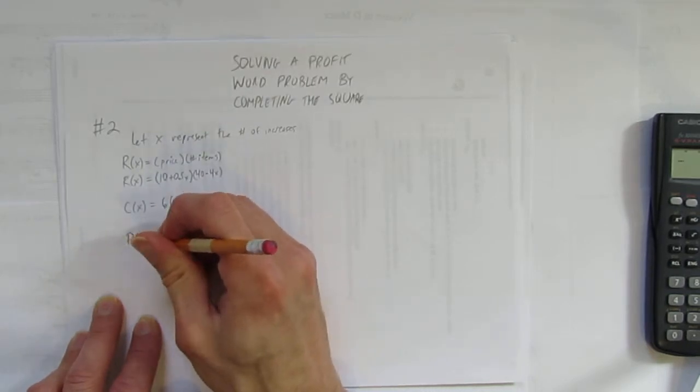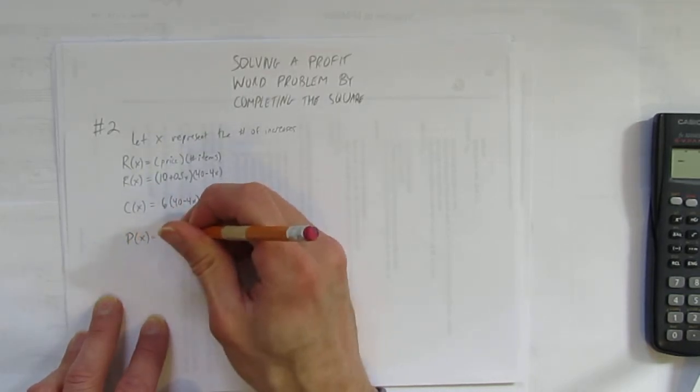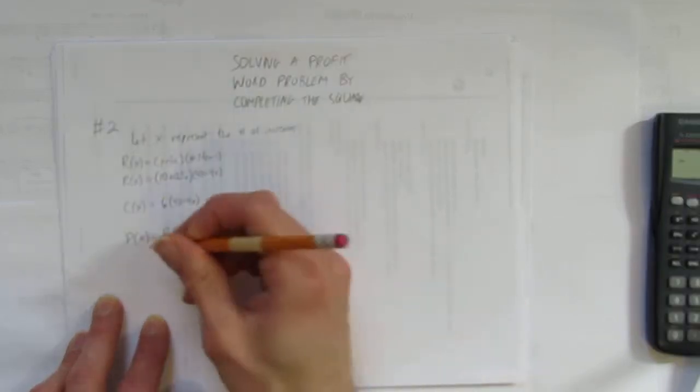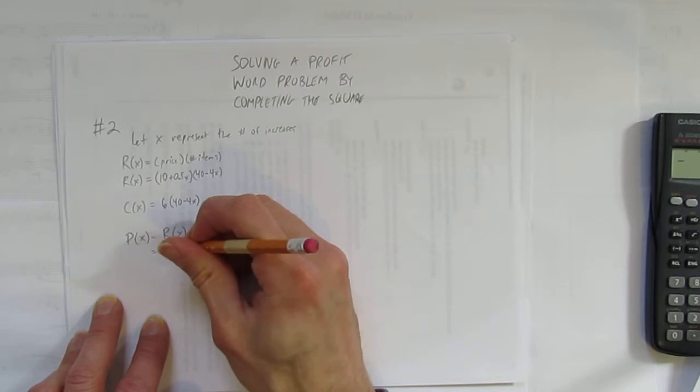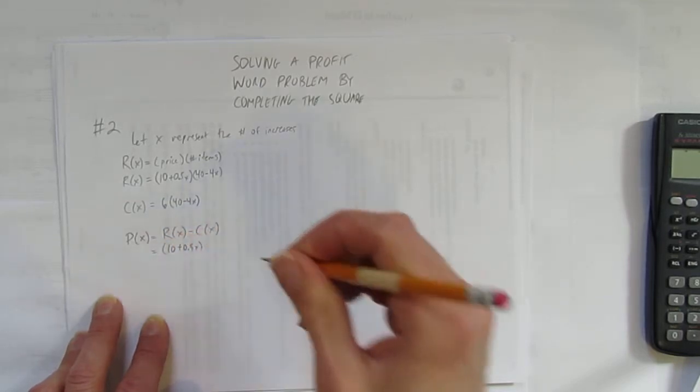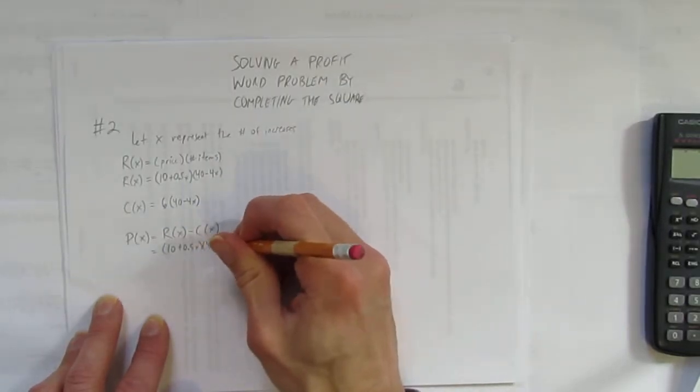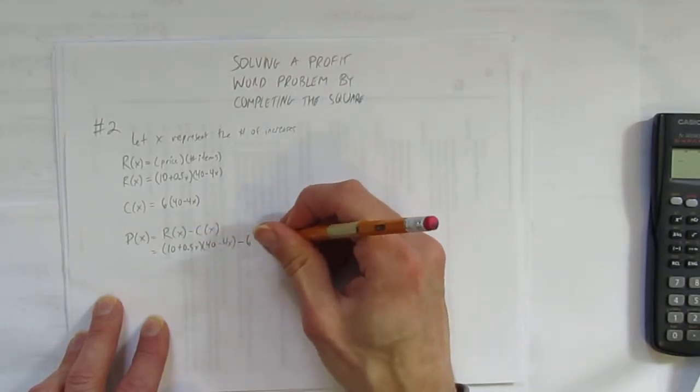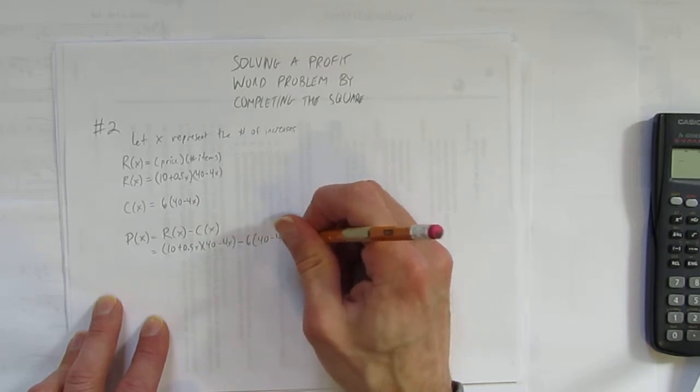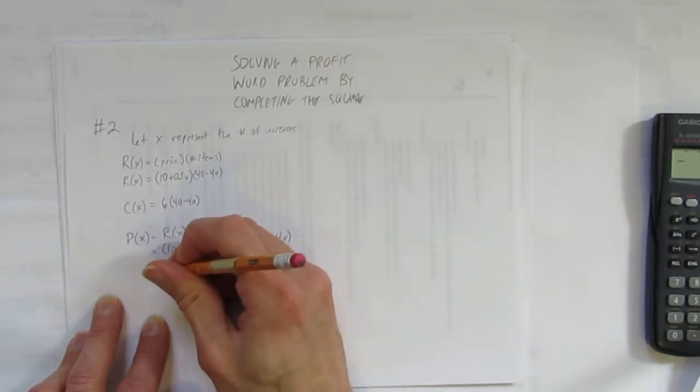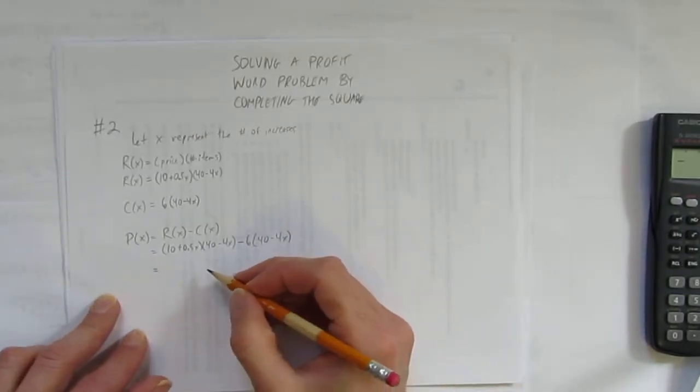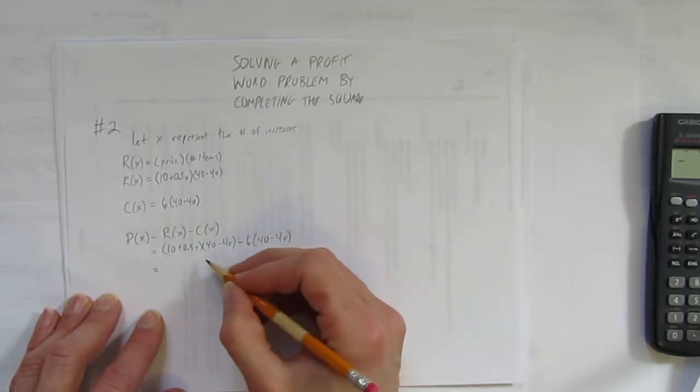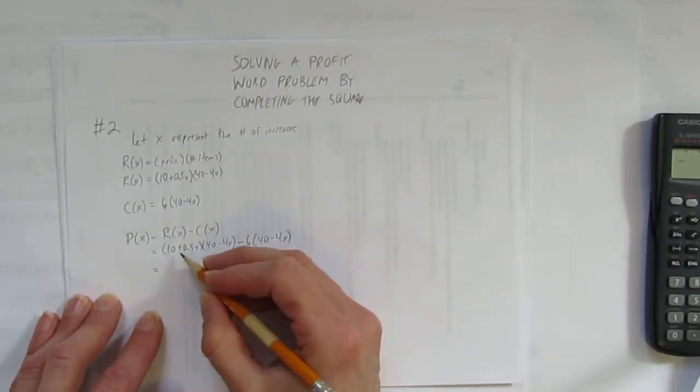Now we can write a profit equation. If you remember profit, and you'll need to know this, profit is revenue minus cost. Our revenue is 10 plus 0.5x times 40 minus 4x. All takeaway, don't forget this minus, it's very important, six times 40 minus 4x. Okay, well now you're back to basic grade nine skills, which is foil and rainbow. You can watch videos on that, expanding using foil. So back to this question. Let's do that foil.